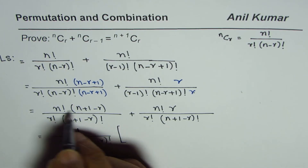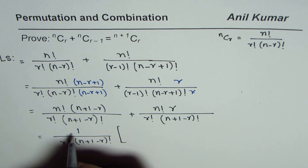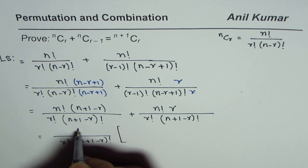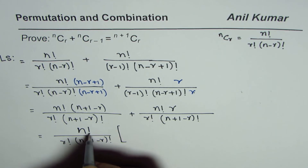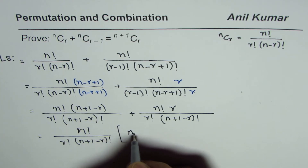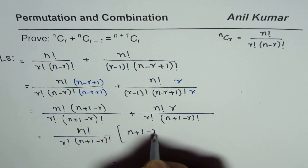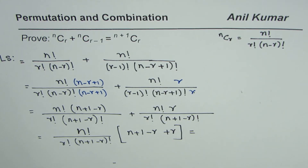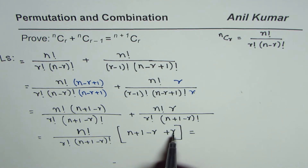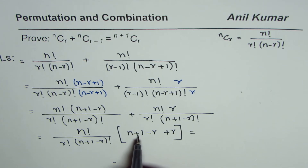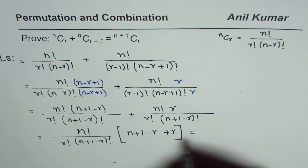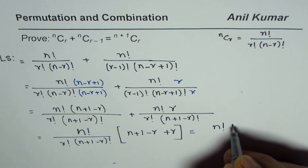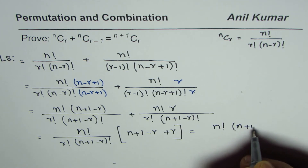In the numerator, let us add the terms. We take n factorial as common, and we have the terms n plus 1 minus r, plus r. Now clearly minus r plus r is 0, so we are left with n plus 1. So the numerator becomes n factorial times n plus 1.